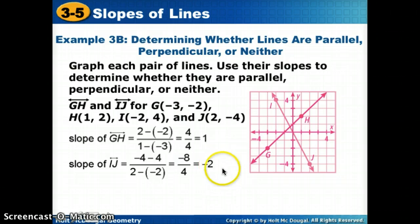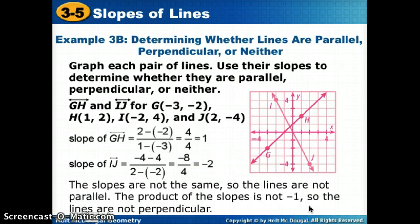So I want a negative 1 down here but IJ goes down 1, 2, 3, 4, 5, 6, 7, 8 over 1, 2, 3, 4. Negative 8 over 4 gives me a negative 2. So if I multiply 1 and negative 2, I get negative 2, not negative 1. So they're not the same, so they're not parallel but they're not opposite reciprocals so the lines are not perpendicular. So we would call those neither. We'd say they're neither parallel nor perpendicular.